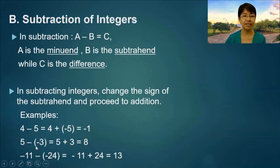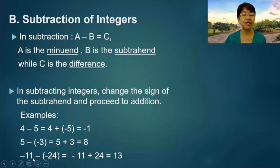5 minus negative 3: the two signs are multiplied and it becomes 5 plus 3, which is equal to 8. And negative 11 minus negative 24 becomes negative 11 plus 24, which is equal to positive 13.